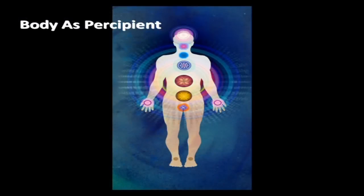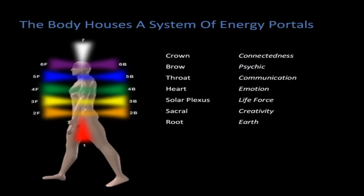What this teaches us is that it isn't just the mind that sees, it isn't just the eyes that see — it's the body. The body as a system of aerials, the body as percipient. The body houses a system of energy portals. There are 7 key ones, another 7 subtle ones, another 7 even more subtle ones, but these are the main ones. And they have specific functions.